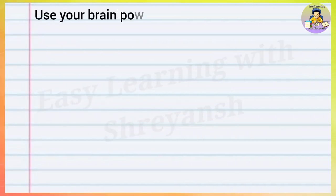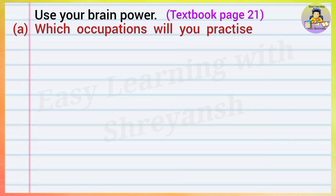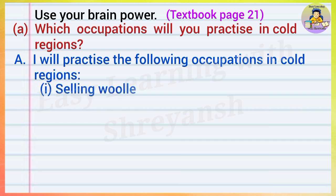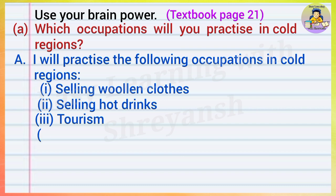Use your brain power. (a) Which occupations will you practice in cold regions? Answer: I will practice the following occupations in cold regions: selling woolen clothes, selling hot drinks, tourism, cinema, short film making.